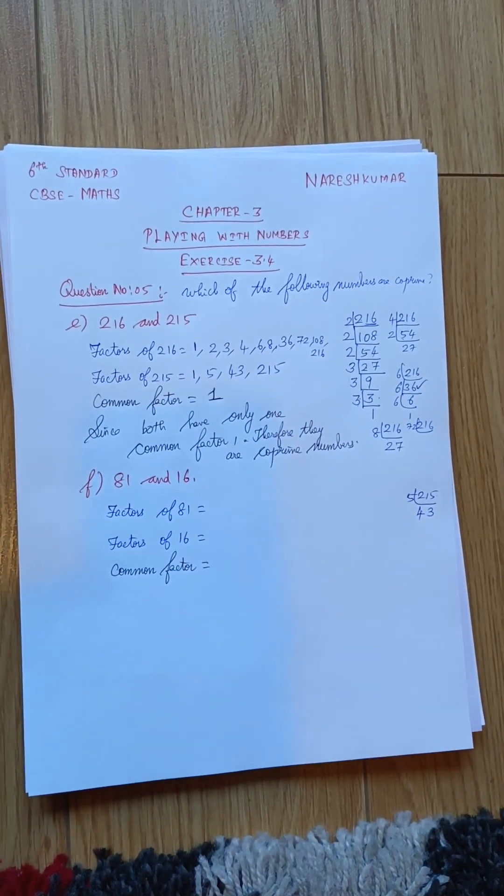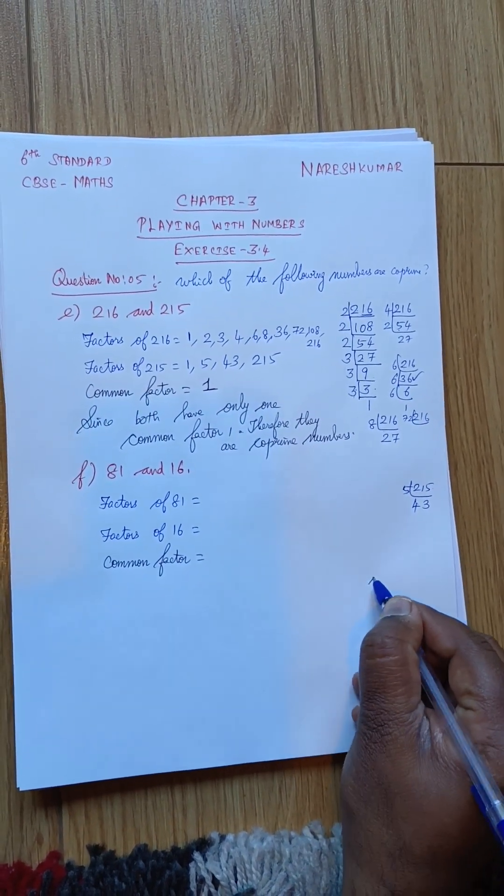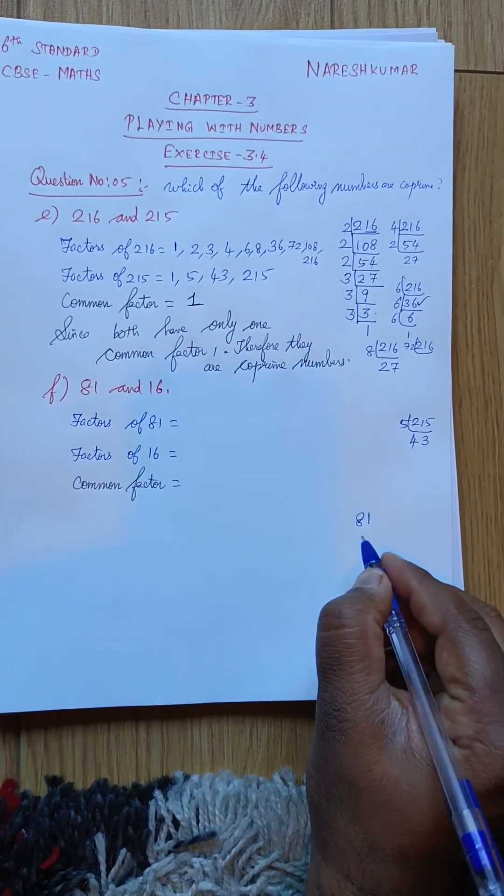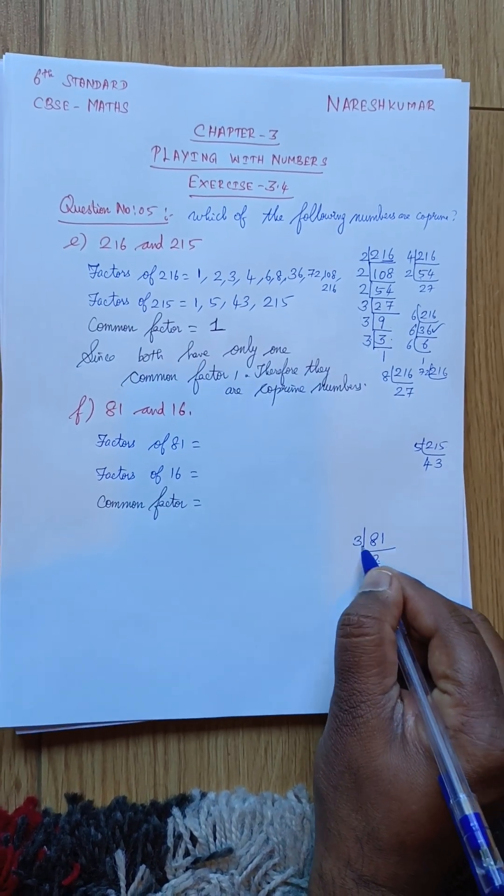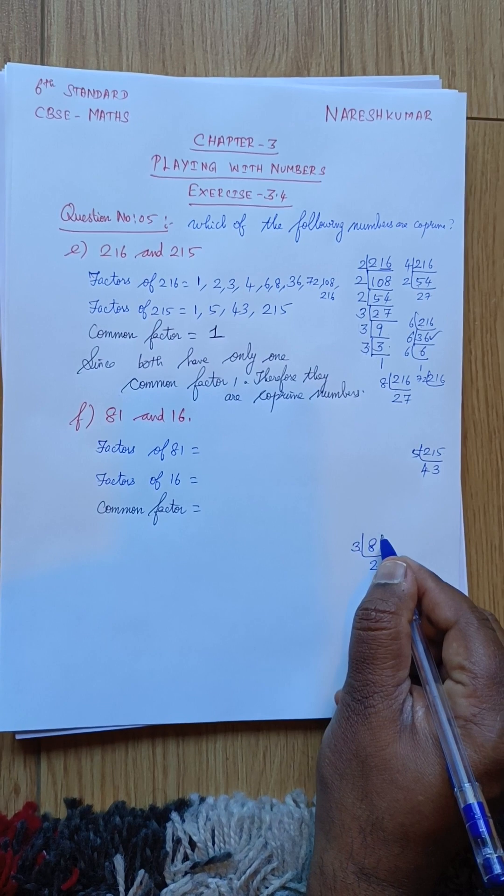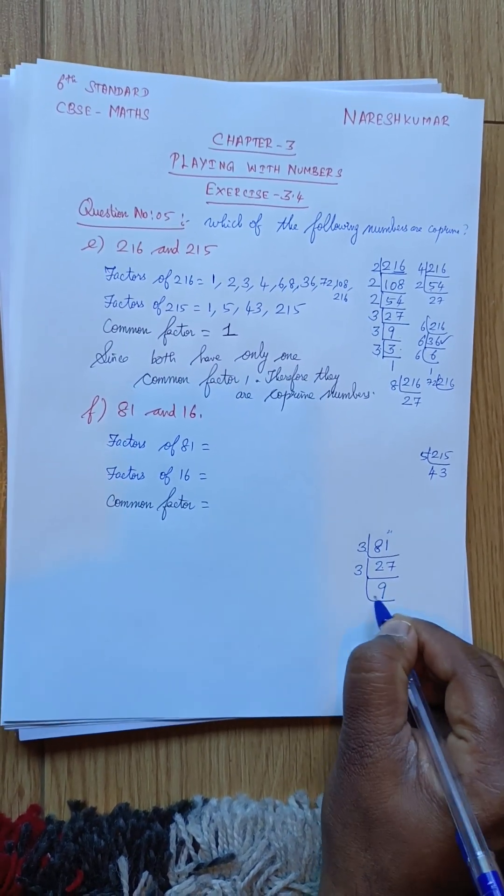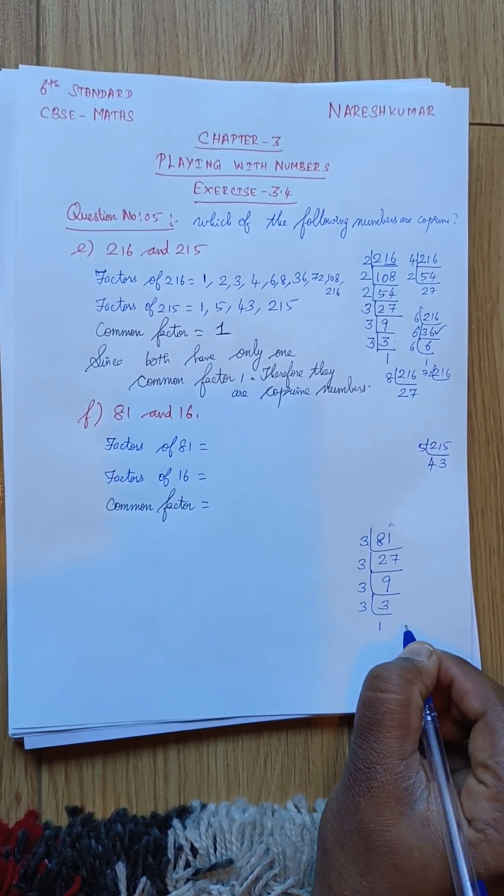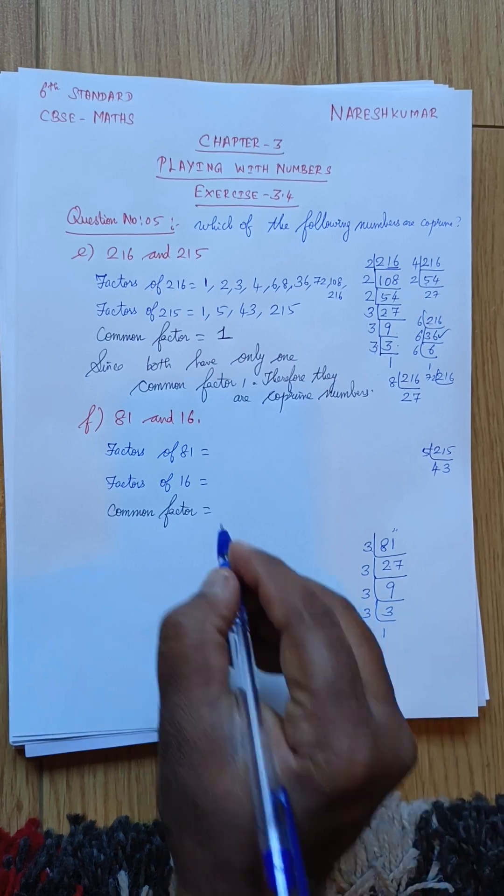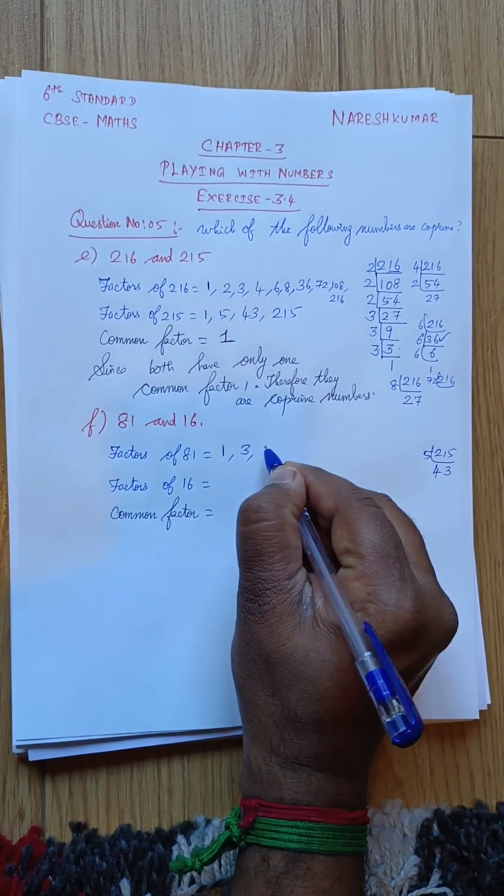Then next, 81. 81, we will try it. 2, 3, 2, 3's are 6. Balance 2. So it will be considered as 21. 7, 3's are 21. 3, 9, 3's are 21. 3, 3, 3's are 9. 3, 1. So what are the numbers it will come? 1, 3, 9, 27, 81.